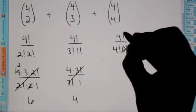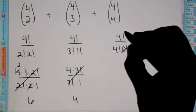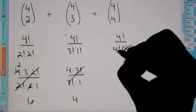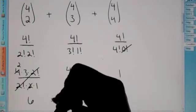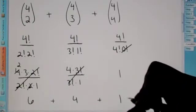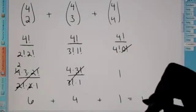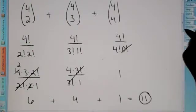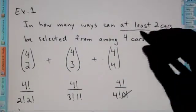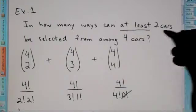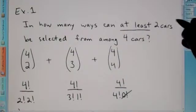That cancels out. And then anything divided by itself, so four factorial divided by four factorial, is one. So what we do is we just add these three values up. So we get six plus four plus one, which would be eleven. So, how many ways can at least two cars be selected from among four cars? There's eleven different choices.